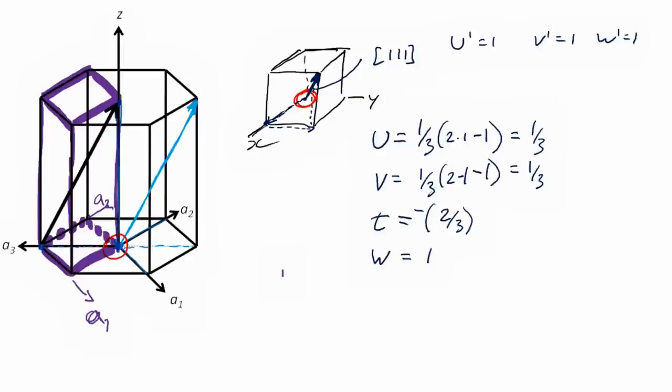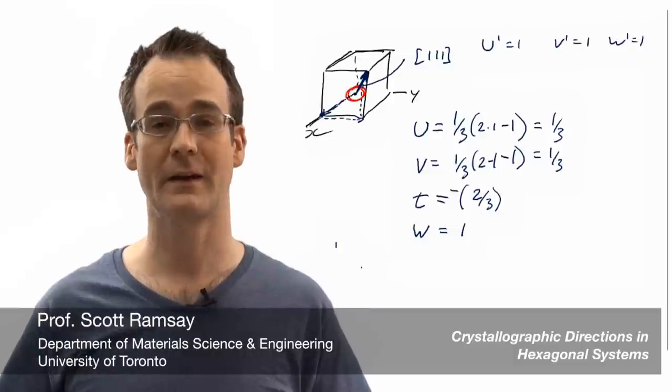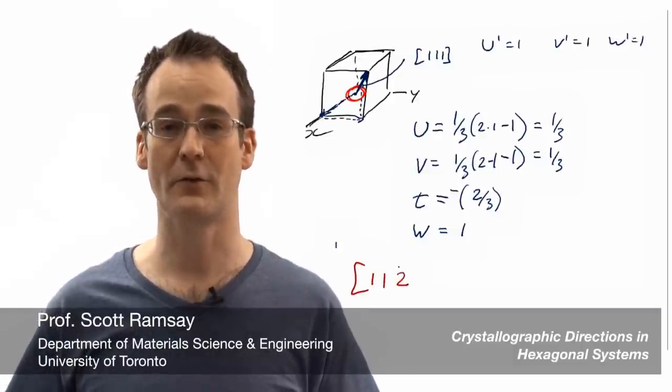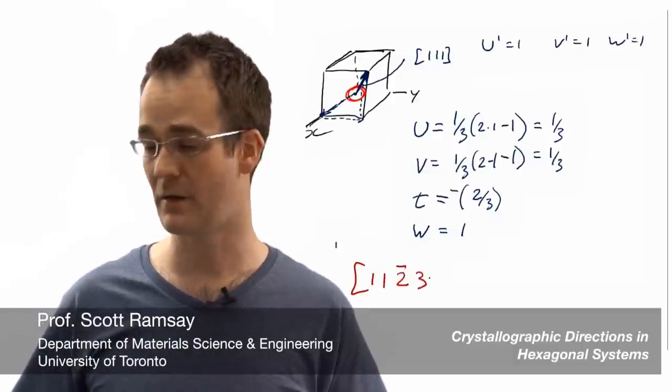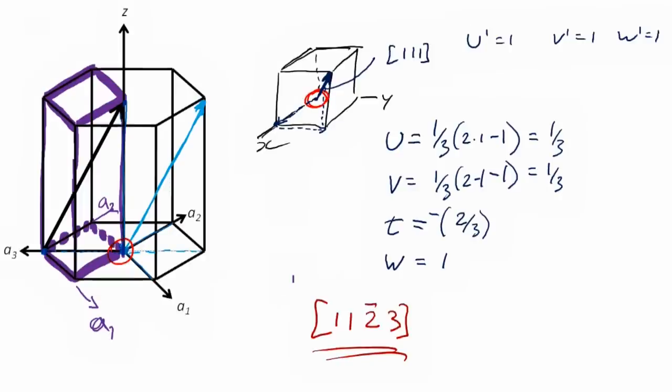And so we'll have that U is one-third, V is one-third, T then is negative two-thirds, and W is just W prime, which is one. So we're almost done. We've just got the three in the denominator there. And so we're going to just multiply across by three to clear the fractions. And we're going to end up with one, one, negative two, and three.